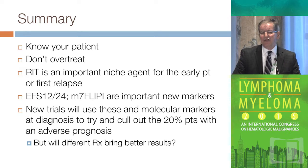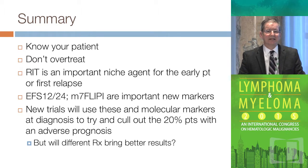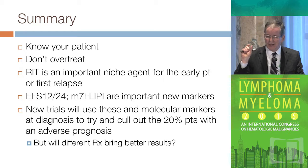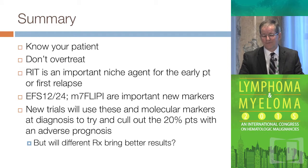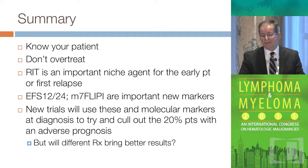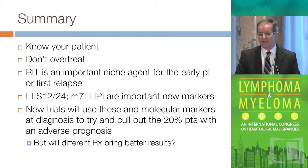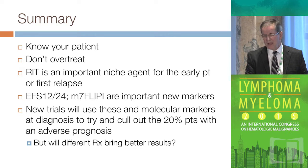In summary: you have to know your patient before you pick the sequence. Don't over-treat — that last cycle of bendamustine is when the counts really go down, and you'd love to take it back. RIT is an important niche agent for the early patient or first relapse; the later you use it, the more damaged the marrow. I've talked about the markers EFS-12 and EFS-24 and the M7-FLIPI, and the new cooperative group trials coming are going to use these molecular markers to try to find that 20% and improve outcomes for them.